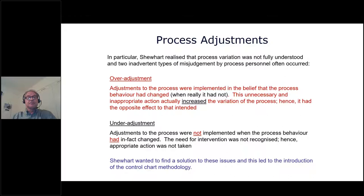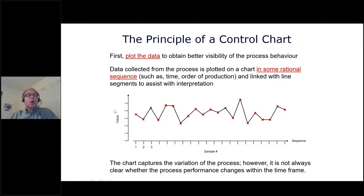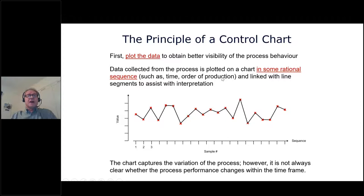The opposite type of misjudgement was under-adjustment: adjustments were not implemented when the process behaviour had in fact changed. The need for intervention was not recognised, so no action was taken. Shewhart wanted to find a solution to these issues, and this led to the introduction of the control chart methodology. One of the key principles in SPC is to plot the data to give it visibility on a chart or graph — it's much easier to understand a data set when presented visually rather than interpreting large quantities of numbers.